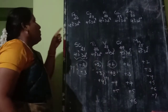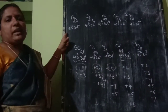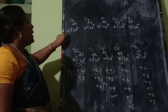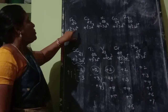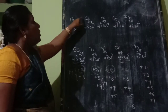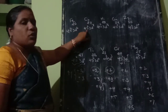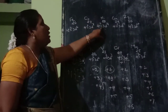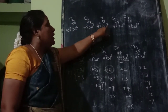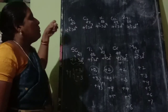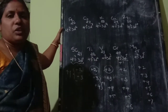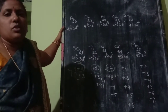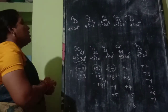Let's note the electron configurations: iron is 4S2 3D6, cobalt is 4S2 3D7, nickel is 4S2 3D8, copper is 4S1 3D10, and zinc is 4S2 3D10.